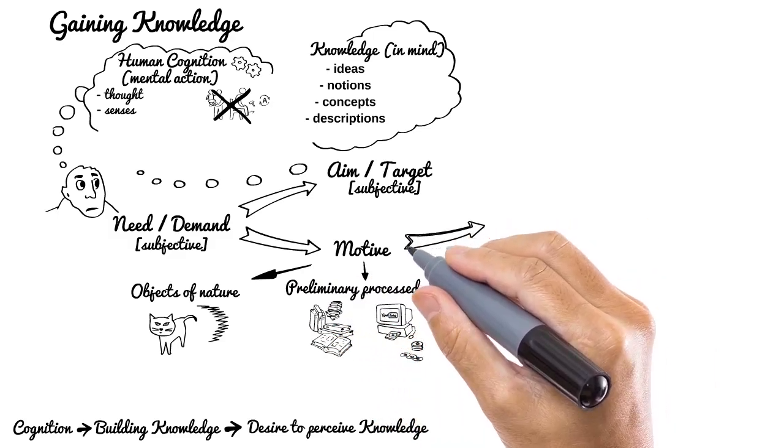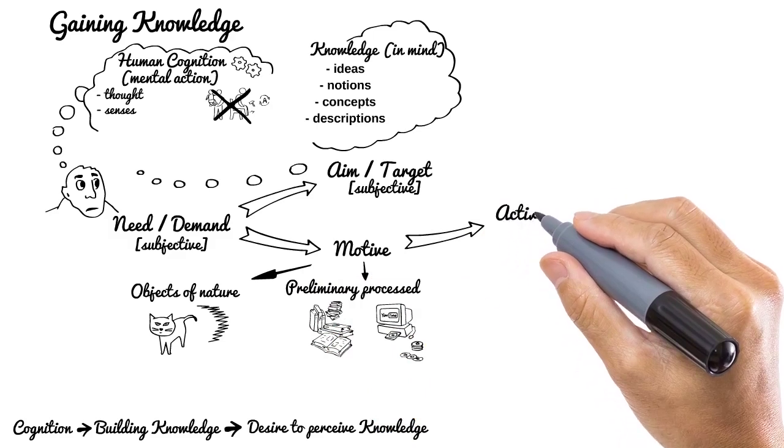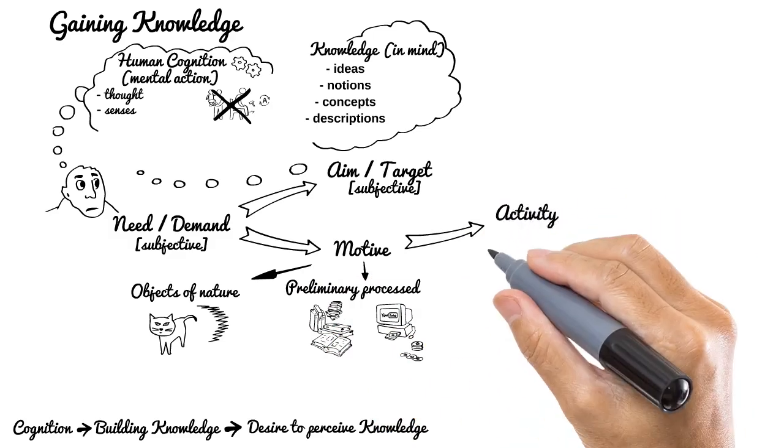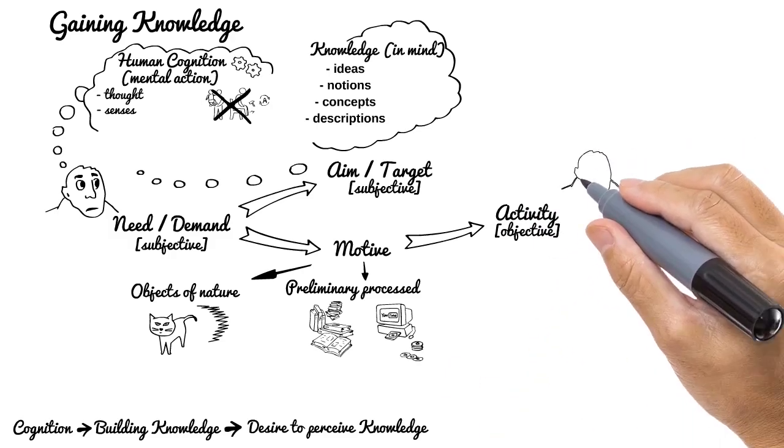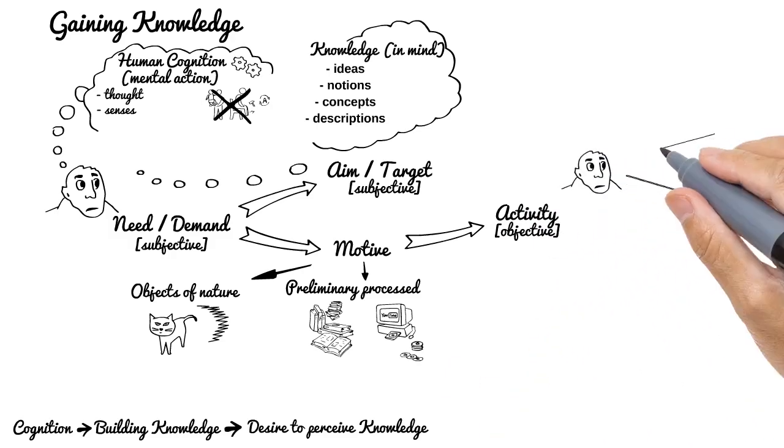Third step: Consequently, there is an activity coming next aimed to achieve a motive. It can be objectively observed by people around. So, motive actually influencing on behavior by urging to certain activity. In our case, it's receiving information.